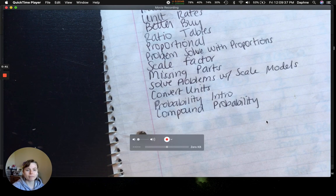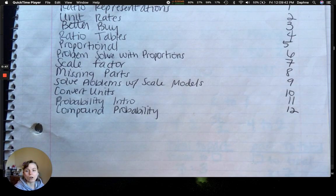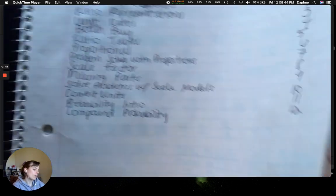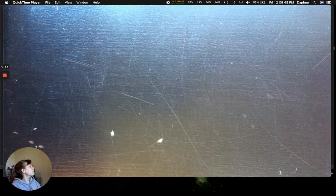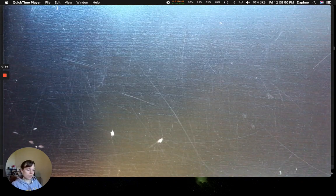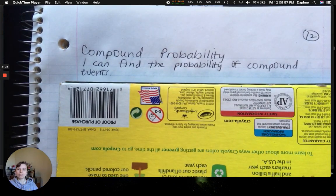Okay. So, table of contents. We are on compound probability, which is on page 12. Alright. And I don't really have a good piece of blank paper. So we'll do this.